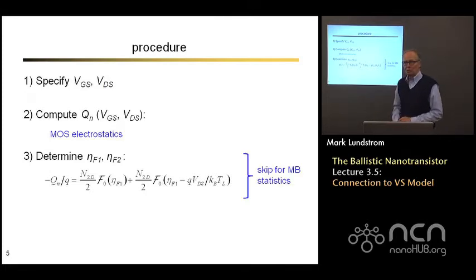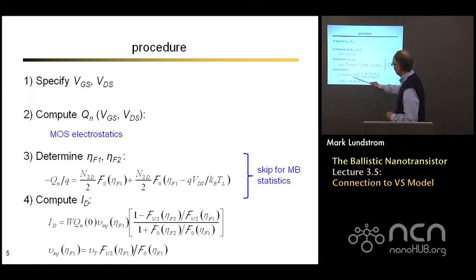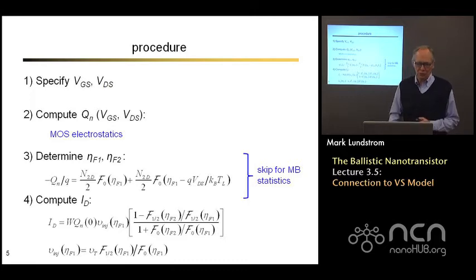If we're using Maxwell Boltzmann statistics, we can skip this because results are independent of the location of the Fermi energy. Then we can compute the drain current because we know everything - we know the charge, and now since we know the locations of the Fermi levels, we can compute everything else we need, and we have one point on the IV characteristic. So that's how the procedure would work.